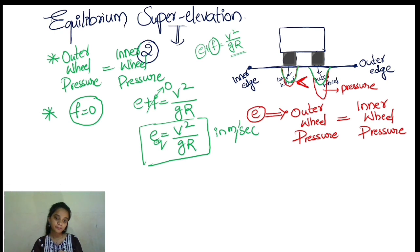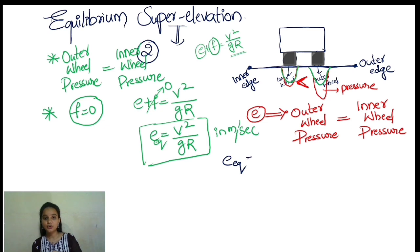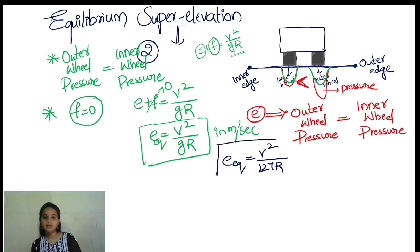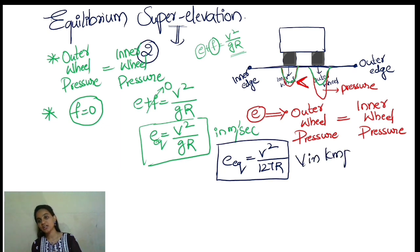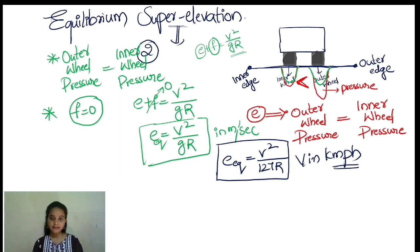Note that when V is in meters per second the formula is E = V²/2GR, and when V is in kilometres per hour the formula is adjusted accordingly — typically E = V²/127R.